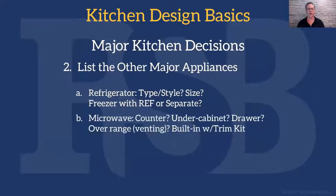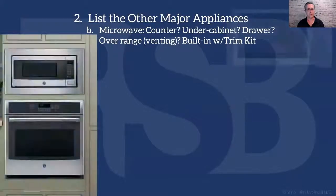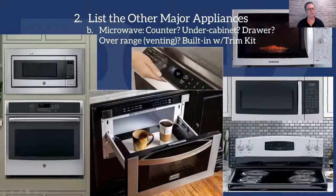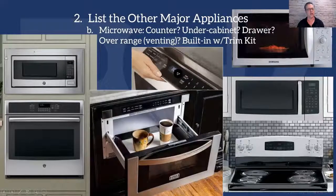The microwave: will it be on the counter, under a cabinet, a drawer unit, over the range as a venting unit, or built in with a trim kit? Those are the five typical styles. Here you see an oven built into a wall oven cabinet alongside a microwave built into the same cabinet — the piece around the outside is called a trim kit, because microwave ovens don't come at the 30 or 33-inch width typical of those cabinets. You have to buy the unit and the trim kit so your contractor can custom-cut the hole and embed it into the wall oven cabinet.